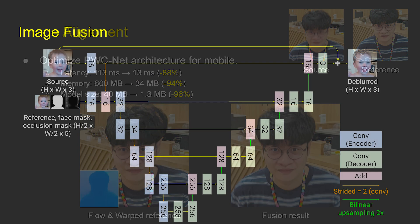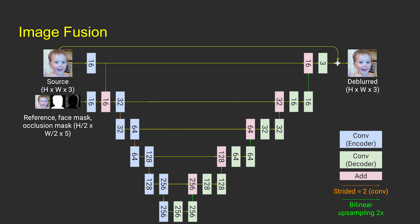Our fusion net is a 5-level U-Net. Note that the size of the cropped ultra-wide face is about half of the source face. Therefore, we resize the reference image, subject mask, and occlusion mask to be 2 times smaller than the source image, and feed them to the second level of the fusion net for saving memory.